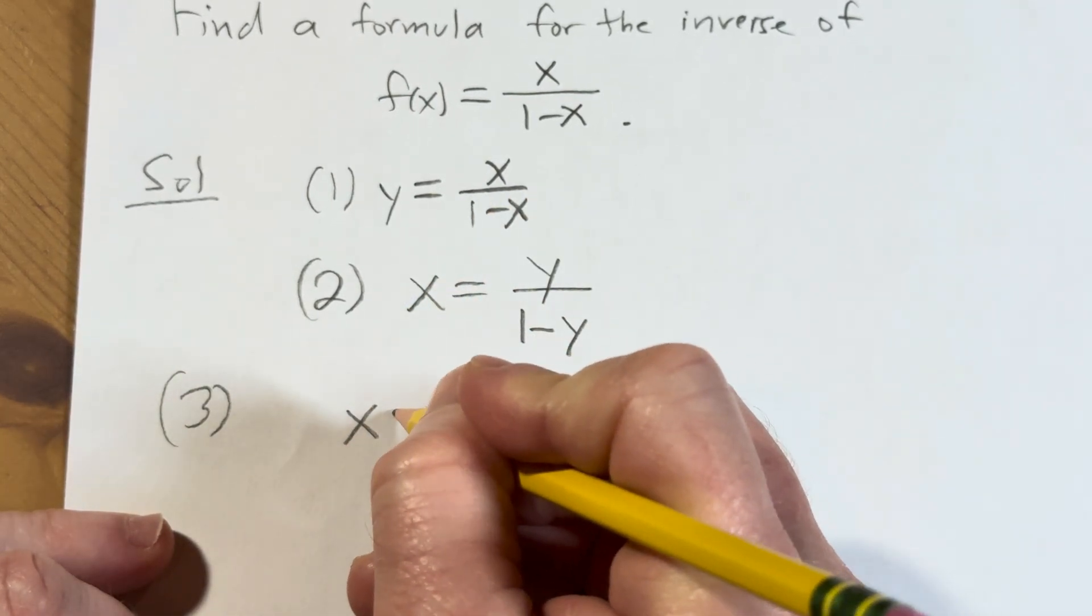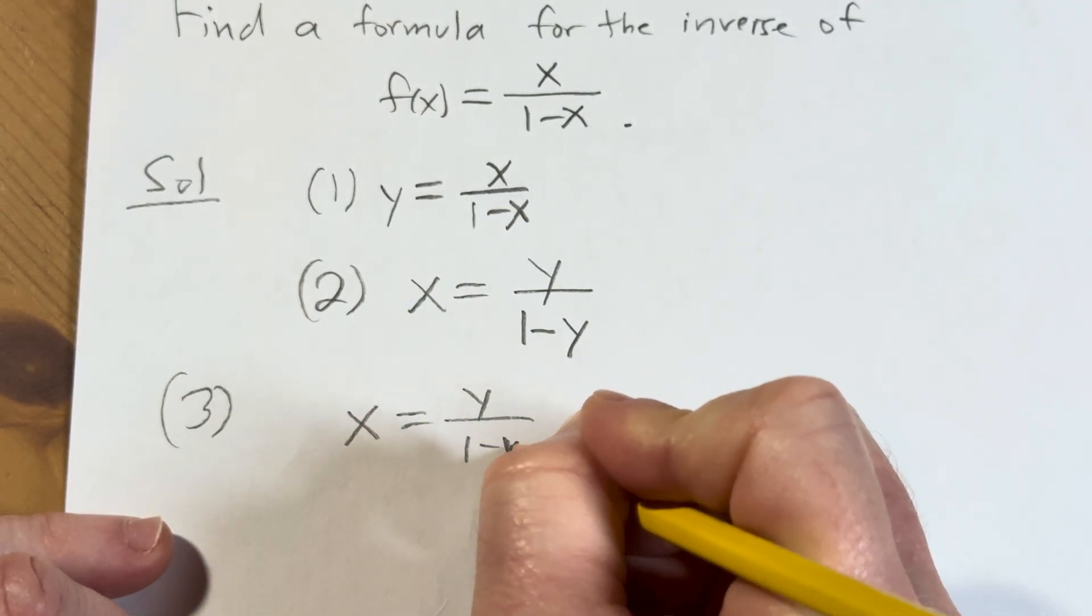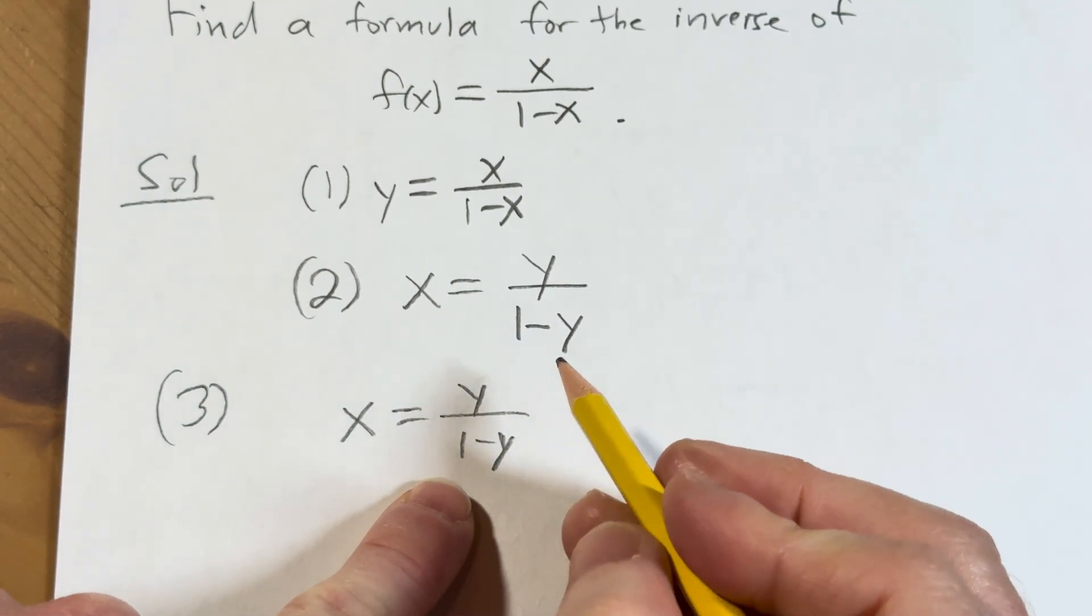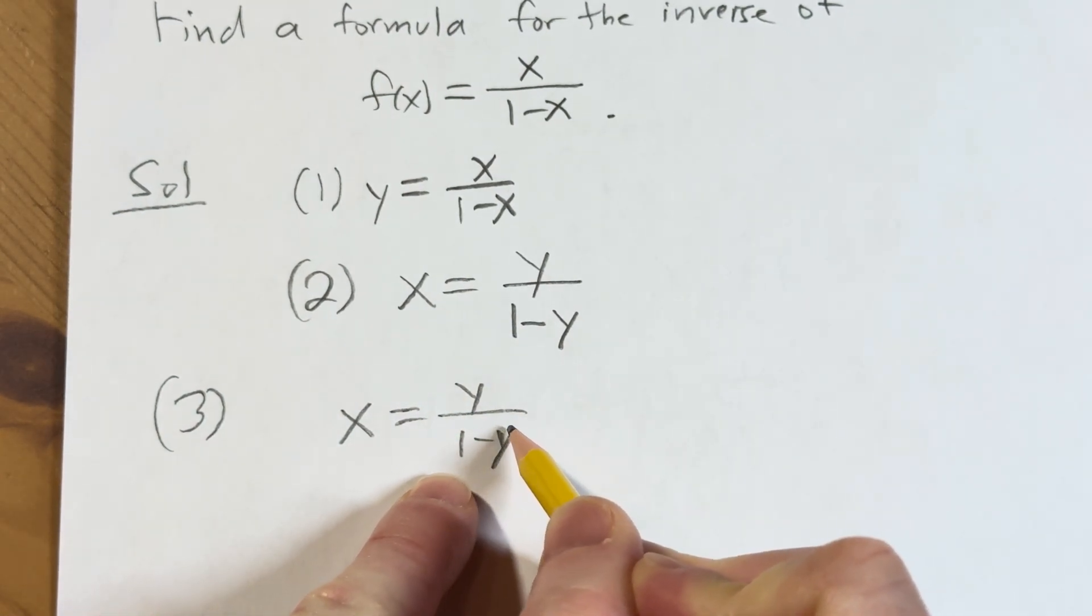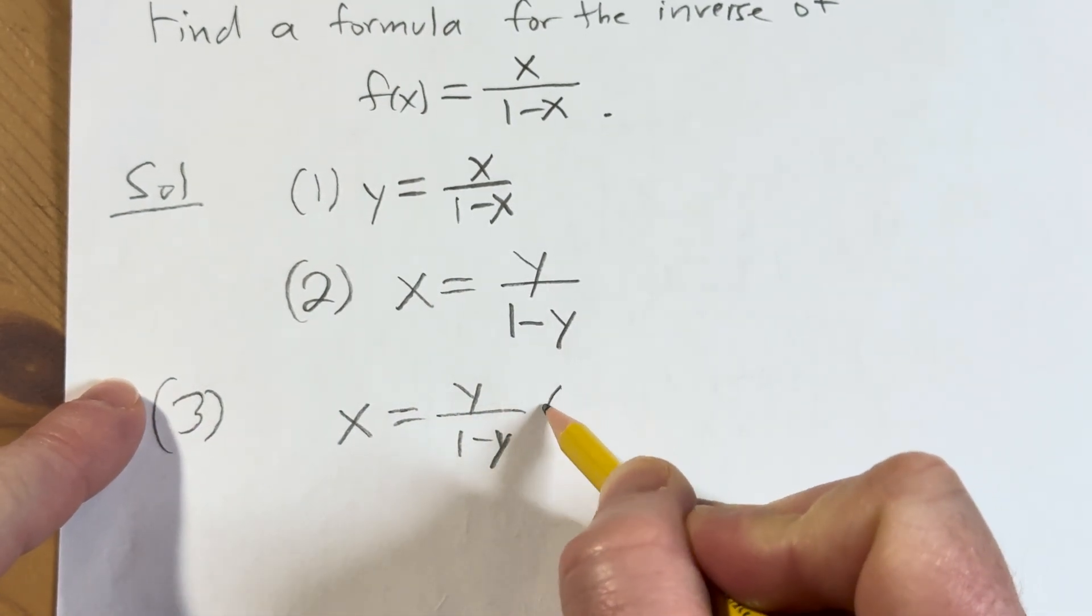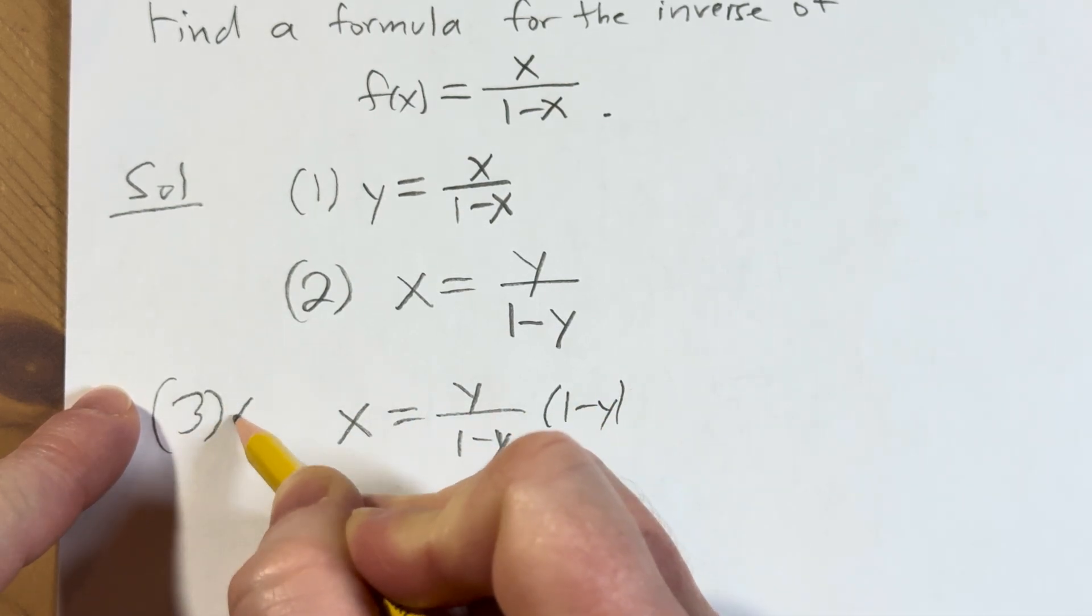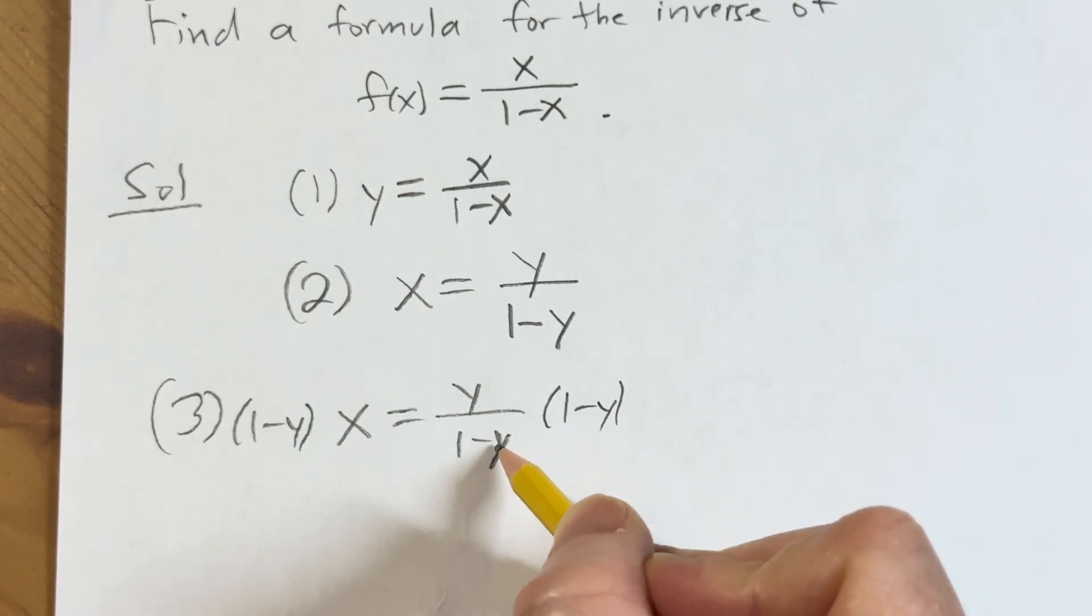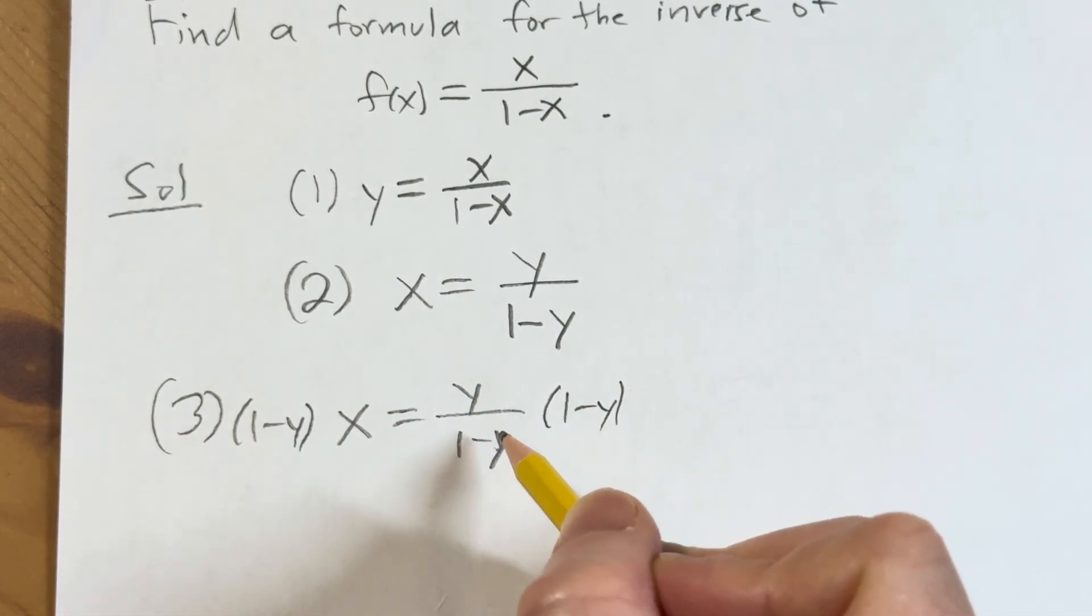I write it down again for clarity. To solve for y, we have to eliminate this fraction, so let's multiply by 1 minus y. We have to do that because the y is on the bottom. We're never going to be able to solve for it if it's down there.